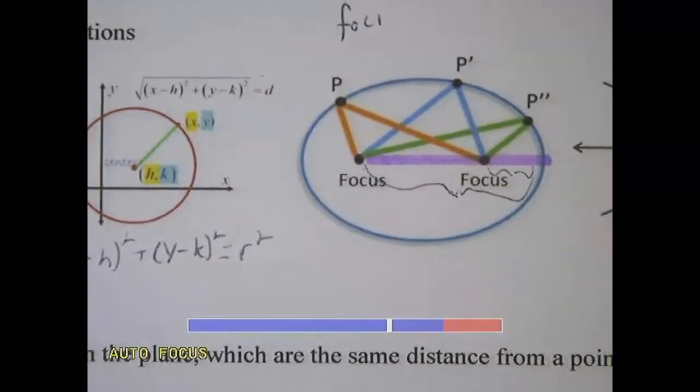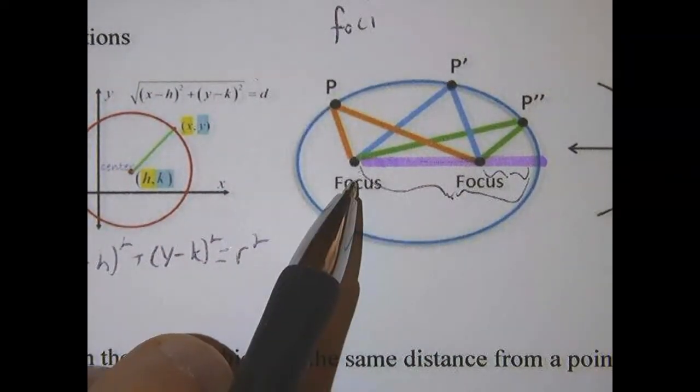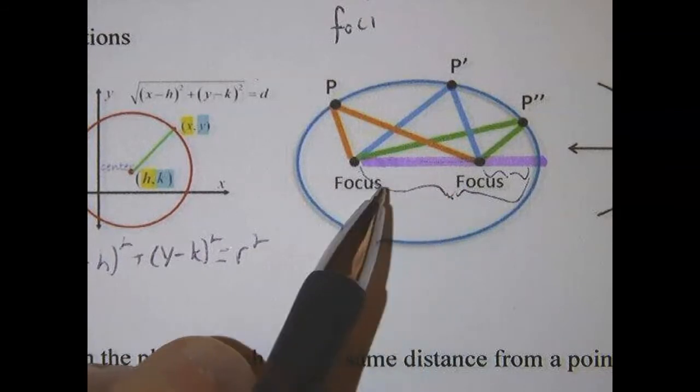Alright, let's look at the next one, the ellipse. So ellipses have two foci, that's just plural for focus. And there's two of them.